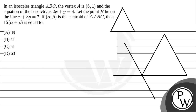Hello Bacho. In this question it is given that in an isosceles triangle, the vertex A is (6,1). The equation of the base BC is 2x + y = 4. Let the point B lie on the line x + 3y = 7. If alpha and beta is the centroid of the triangle ABC, then 15 into alpha plus beta is equals to?